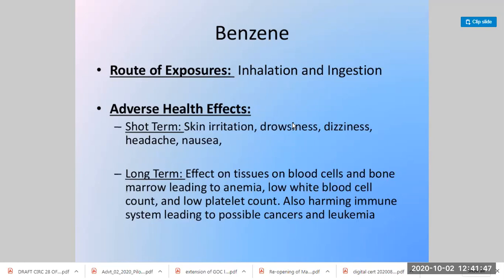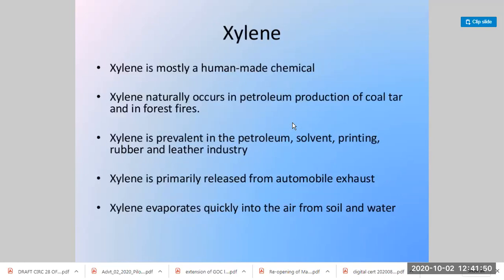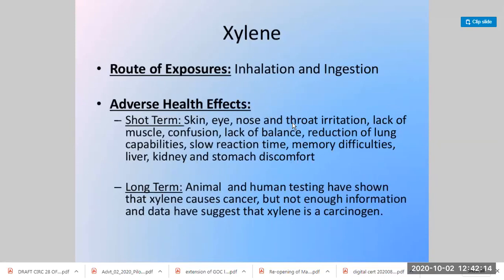Xylene is mostly a human-made chemical, though it naturally occurs in some petroleum, coal tar production, and some forest fires. It is prevalent in petroleum solvents and printing, rubber, and leather industries. Xylene is primarily released from automobile exhaust and evaporates very quickly into soil and water. Adverse effects include skin, nose, and throat irritation, slow muscle response, confusion, lack of balance, and reduced lung capability. Memory difficulties and distorted liver and kidney functions also occur. Animal and human testing has shown xylene may cause cancer, though this is still under investigation.